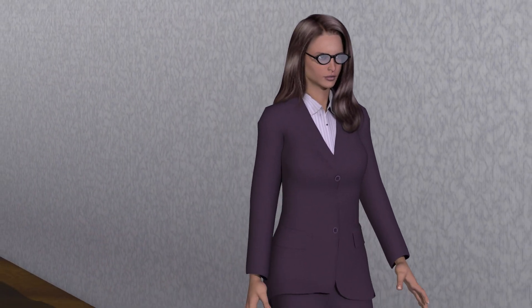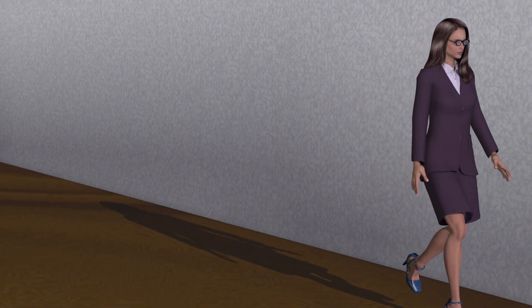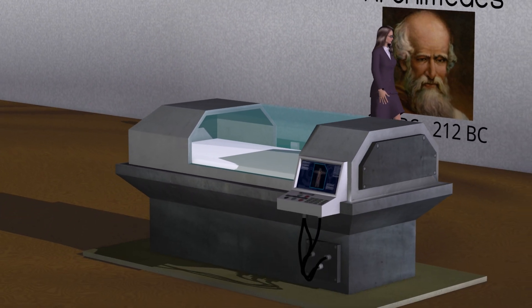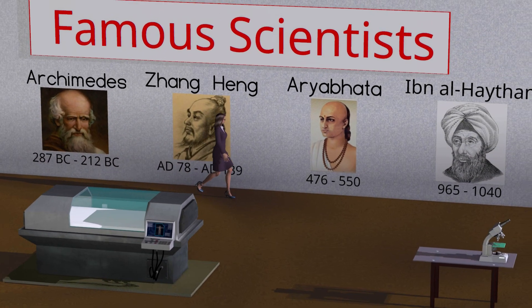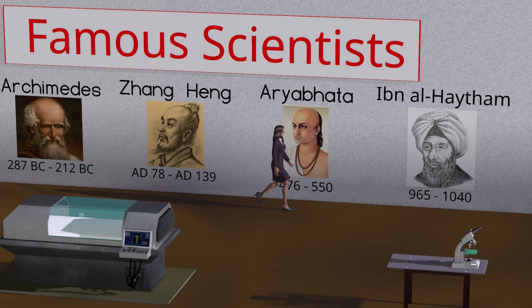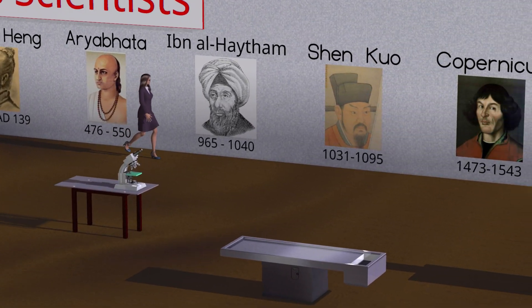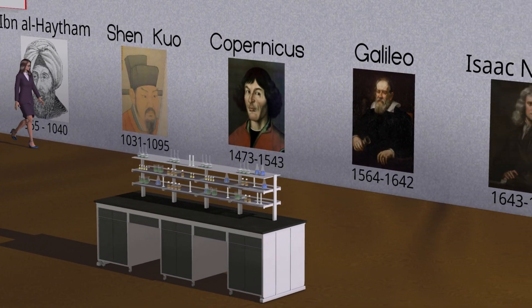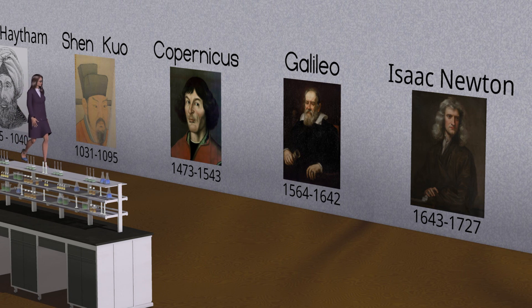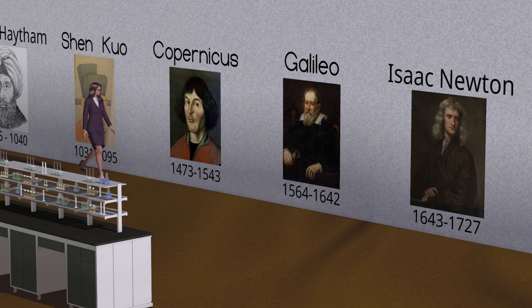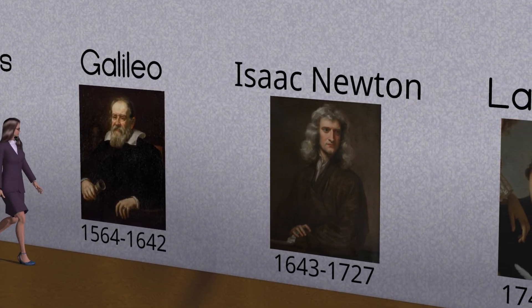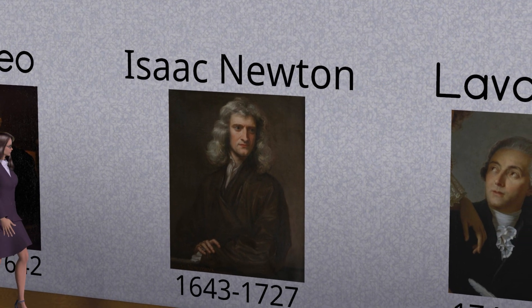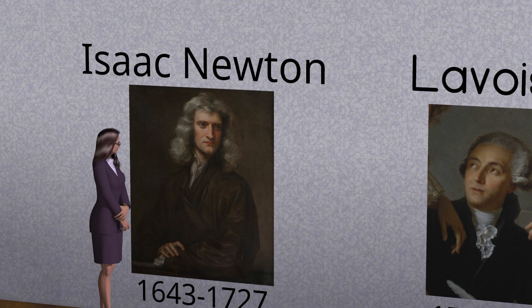Throughout most of history, the word scientist did not exist in the English language, nor was there any other word that conveyed a similar meaning. Even Sir Isaac Newton was never called a scientist during his lifetime, but instead called a natural philosopher, because the word scientist did not yet exist when Newton died in 1727. The word scientist in the English language was coined in 1834 by William Hewell.